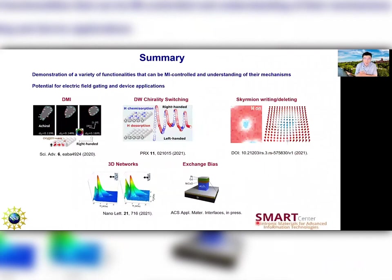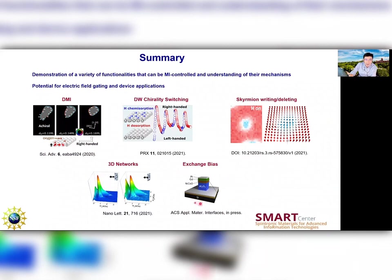To summarize, we've demonstrated a variety of functionalities that can be magneto-ionically controlled and have understood their mechanisms. One major effort is the chemisorption approach, which includes induced DMI, chirality switching of domain walls, and writing/deleting of skyrmions. Another angle is exchange bias, where electric field can enhance and tune the exchange bias, offering device possibilities. In 2D and 3D, we've demonstrated possibilities using prototype 3D networks.